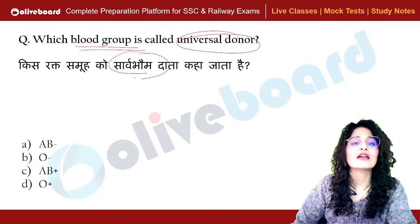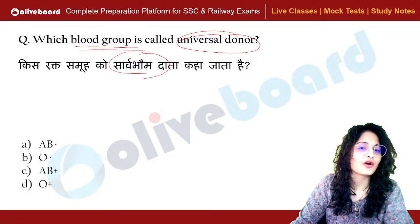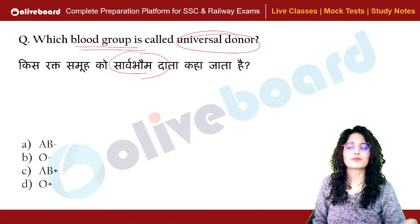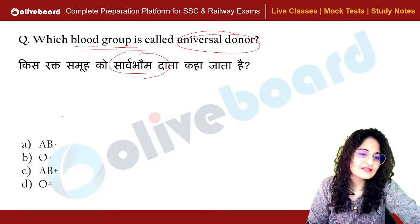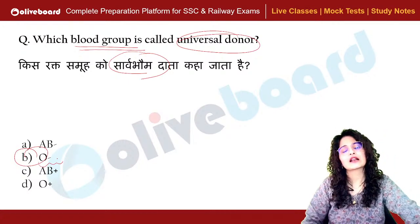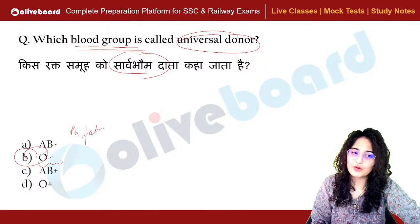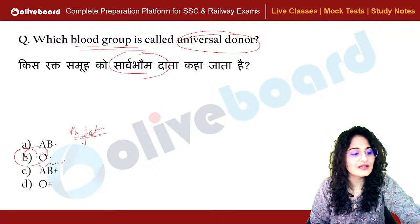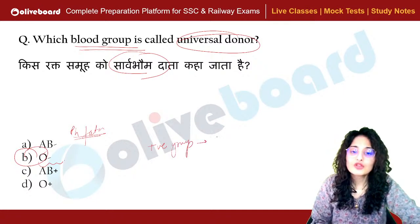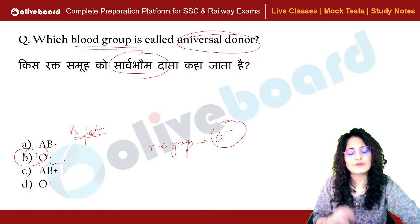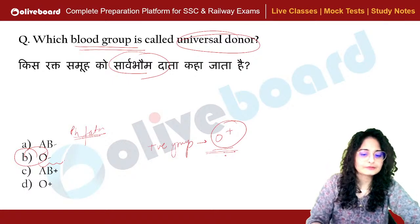Which blood group is called the universal donor? The universal donor can donate blood to anyone — every person can accept that blood. The answer is O negative. O negative blood has no antigen and no Rh factor attached. O negative is the universal donor. A person with a positive blood group can accept O positive, but a person with a negative group cannot take O positive.